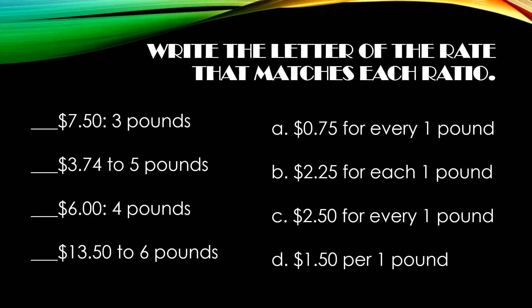If I look at the first one, $7.50 to three pounds. I want to take $7.50 and divide it by three pounds. When I do that, I get $2.50, which makes C my correct answer — $2.50 for every one pound.